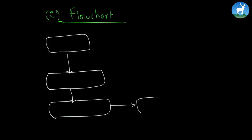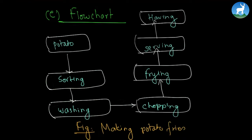The last kind of chart is known as a flow chart. This is a flow chart for making potato fries. First we have the potato, then we sort out the best potatoes. So out of many potatoes we sort out the best ones. Only the best ones are chosen.